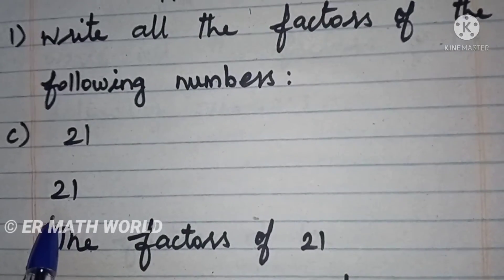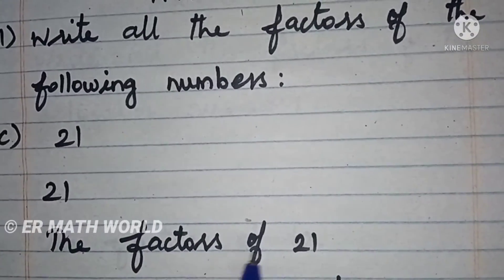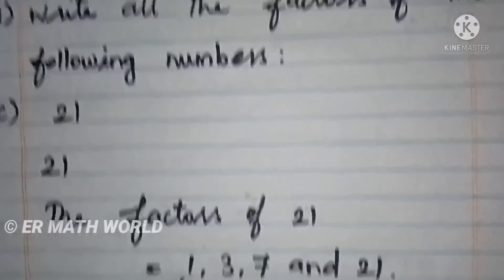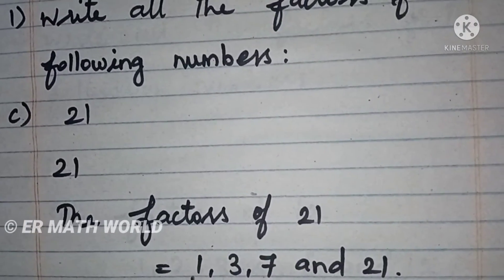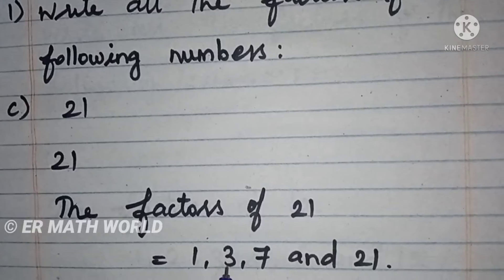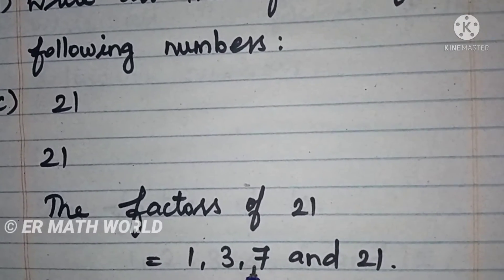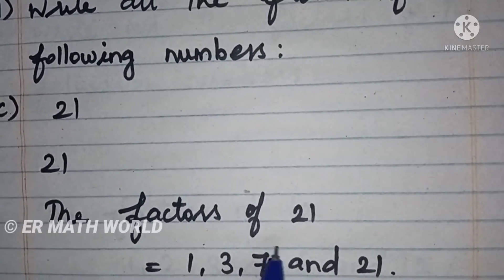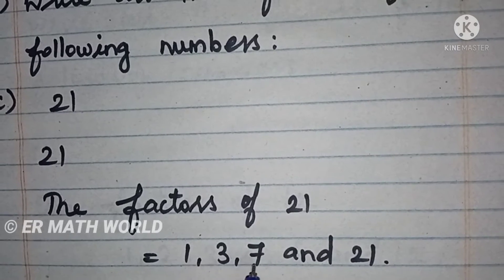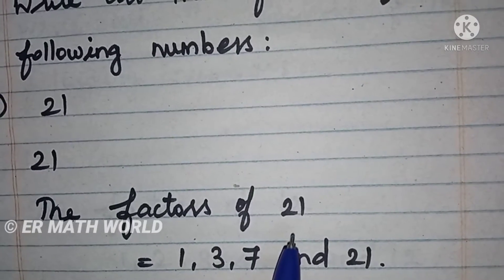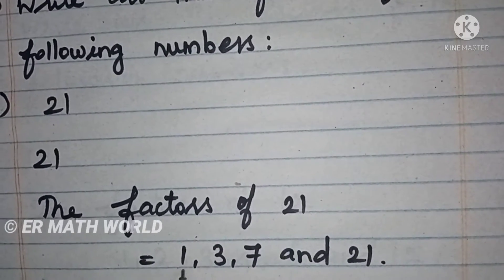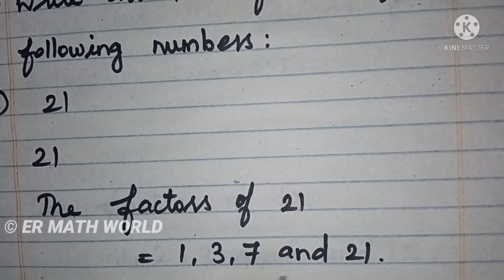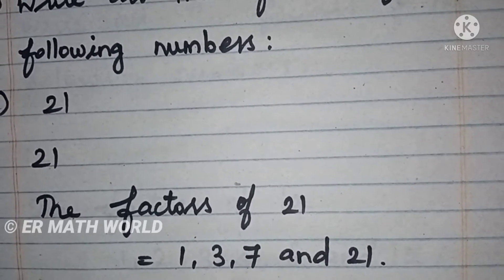Let us see. You have to write the answer: The factors of 21. 21 will come in the 1 table, then 3 table, then it can be divisible by the 7 table. These are the numbers by which 21 can be divided. So, 1, 3, 7, and 21.